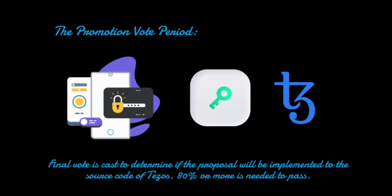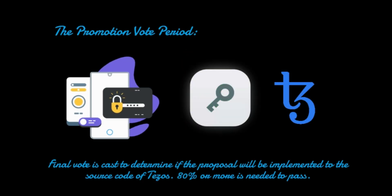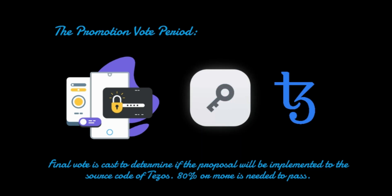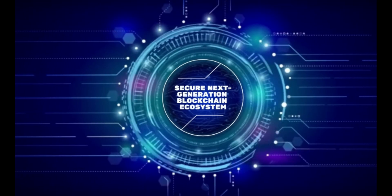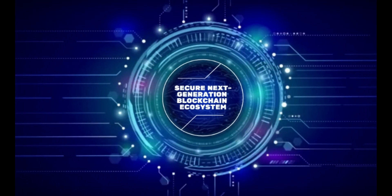In the promotion vote period, a final vote is cast to determine if the proposal will be implemented into the source code of Tezos — 80% or more is needed to pass. Bakers can also be rewarded for beneficial proposals by attaching an invoice to their submission. If their proposal is implemented after passing all four stages, the invoice will mint a specified amount for the baker.